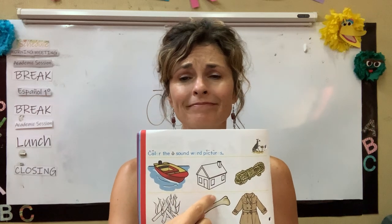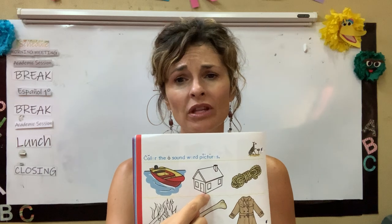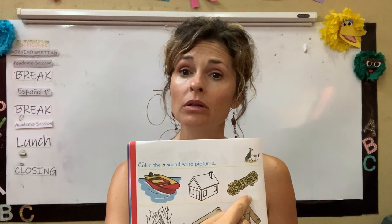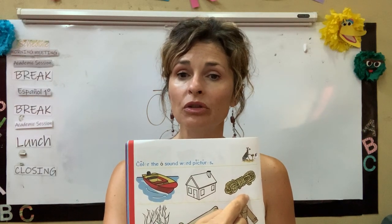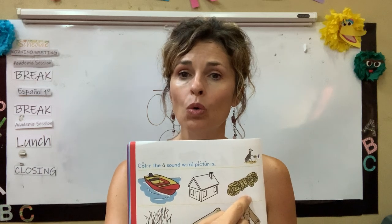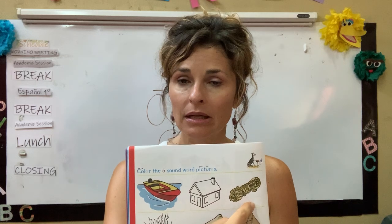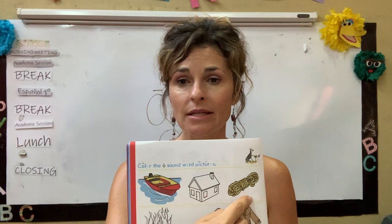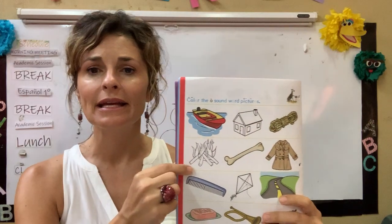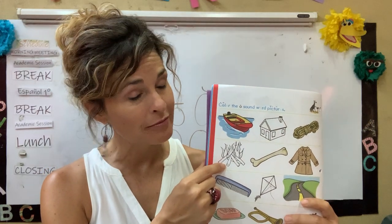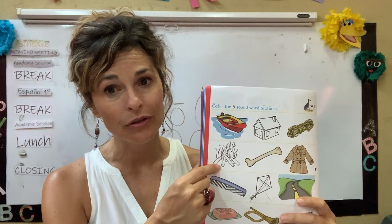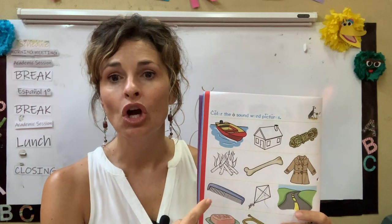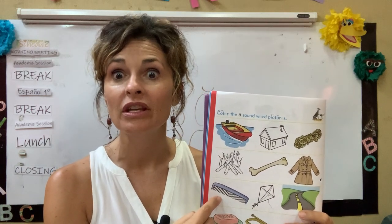The next one is 'house.' When I say house, I don't hear the O sound, so I'm not going to color house. But when I say 'rope' — rope — I hear the sound O-B-O-copy, so I'm going to color the rope. The next thing is 'fire' — I do not hear the O sound, so I will not color fire. But when I say 'bone,' and 'coat,' and 'comb' — yes, I hear the O sound. Very good.